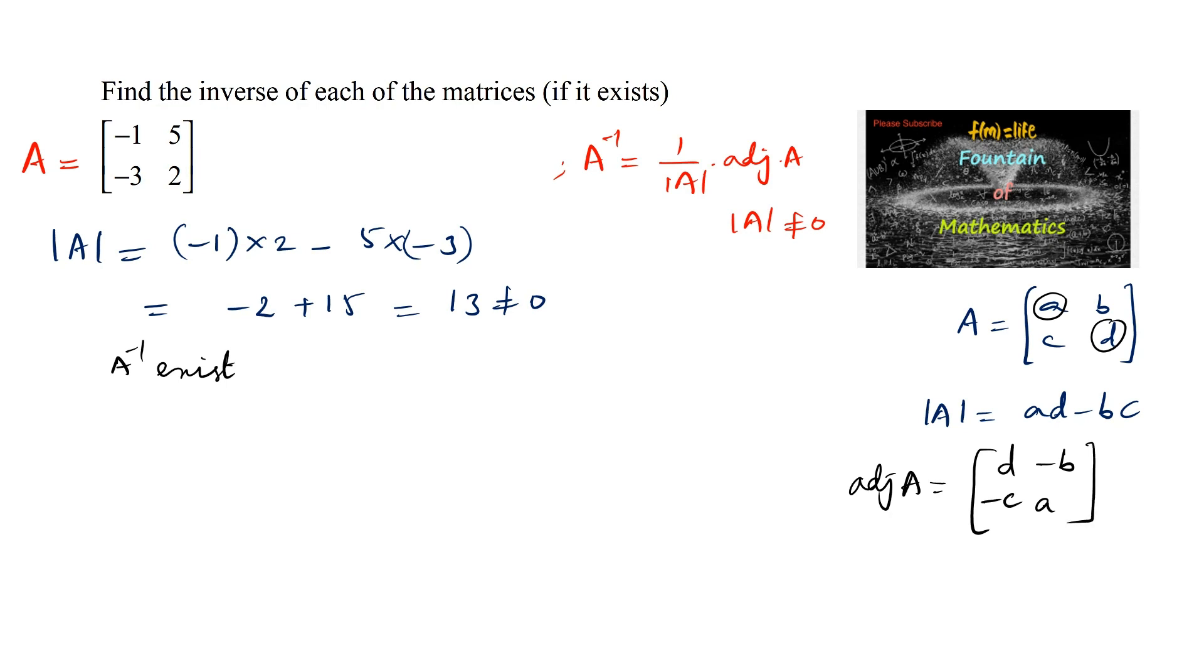So here we can write adjoint of matrix A is equal to interchanging these two elements, that is 2 and minus 1, the diagonal elements, and changing the sign of the remaining elements, minus 5 and plus 3.